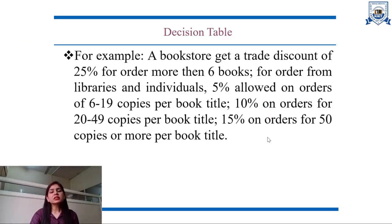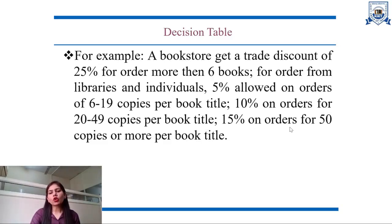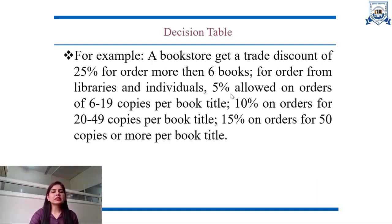Consider an example: a bookstore gets a trade discount of 25% for orders of more than 6 books. For orders from libraries and individuals, 5% is allowed on orders of 6 to 19 copies per book title, 10% on orders for 20 to 49 copies per book title, and 15% on orders for 50 copies or more per book title.